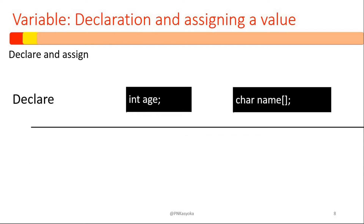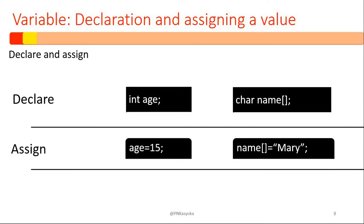Let's look at how you declare and assign a value to a variable. For example, variable age is of an integer type and variable name is of a character type. However, if you look at its declaration, we have square brackets, which indicates we expect variable name to hold more than one character. If we assign after declaring: age equals 15 for the integer variable, and for variable name, which is now of a string type, we assign it Mary.